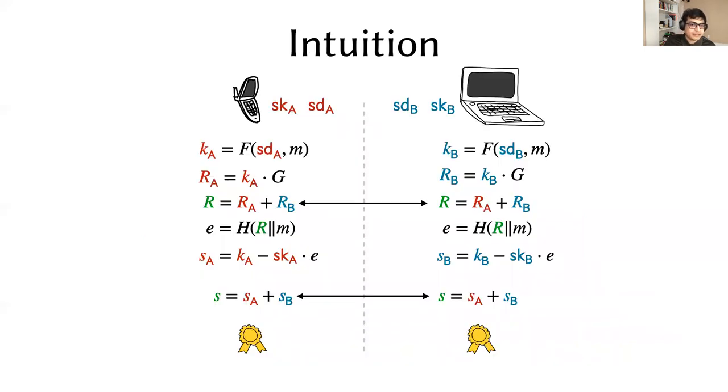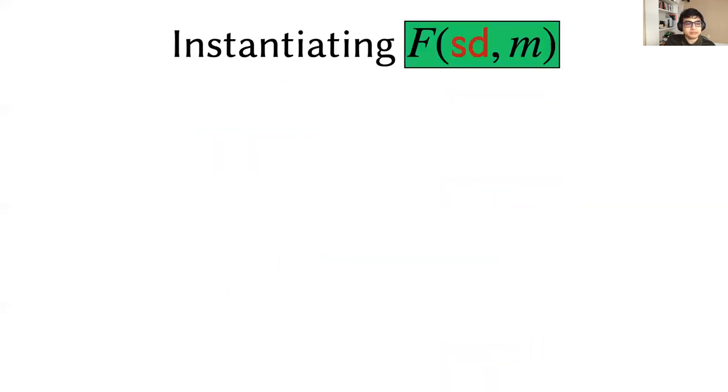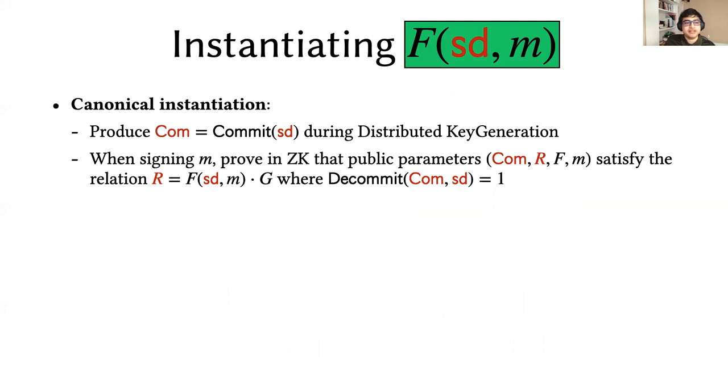The high-level idea is really quite simple. Let's say we have some magic boxes that have embedded in them each party's seed, so that when given the message M as public input, they produce the corresponding nonces RA and RB and deliver them to the opposite party. This is secure by definition. Of course, the canonical way to instantiate such a box is to have each party commit to their respective seeds and subsequently prove in zero knowledge that they've derived their claimed nonces correctly when given a message M.